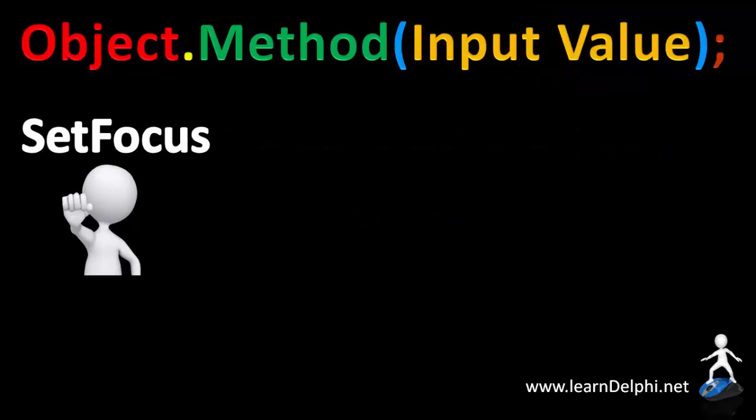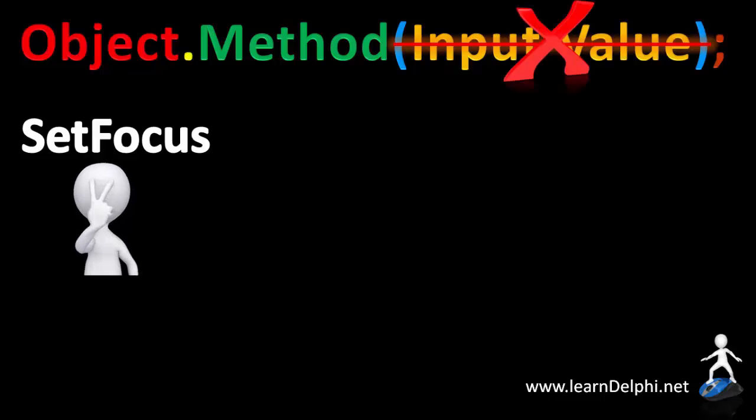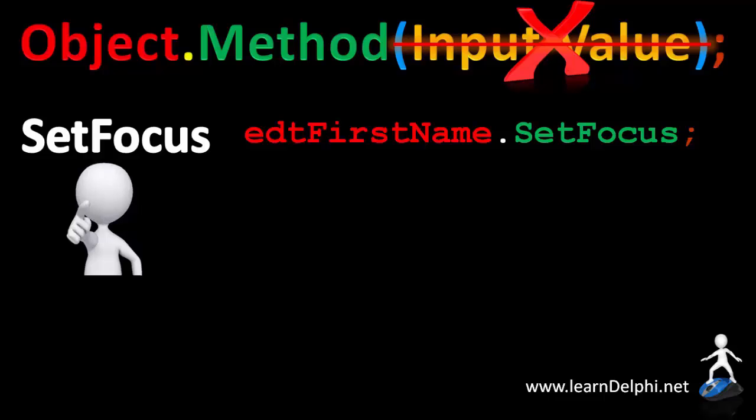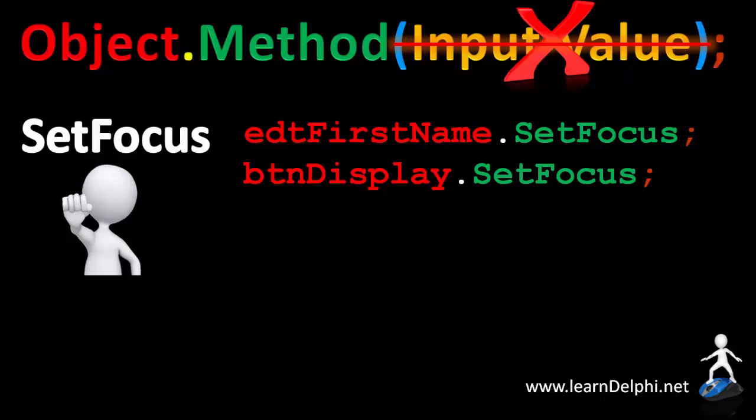The set focus method shifts the focus to an object, or it places the cursor inside an edit. Set focus also doesn't have input values. This statement puts the cursor inside an edit named edt first name with the set focus method. And this statement sets the focus on a button named btn display.